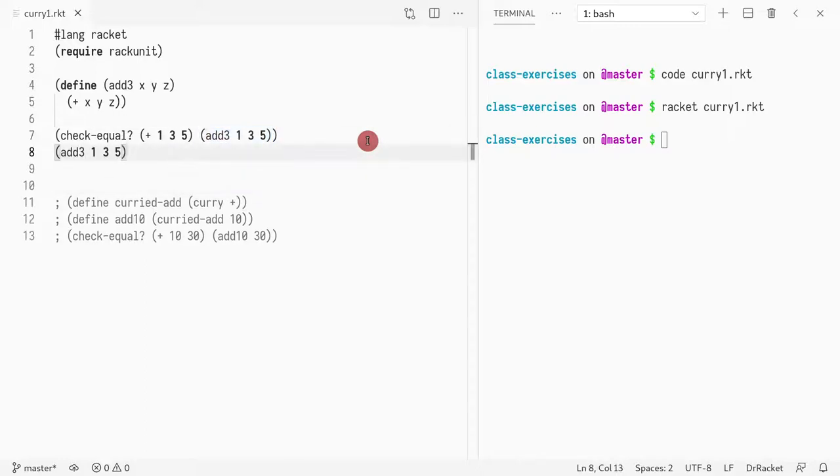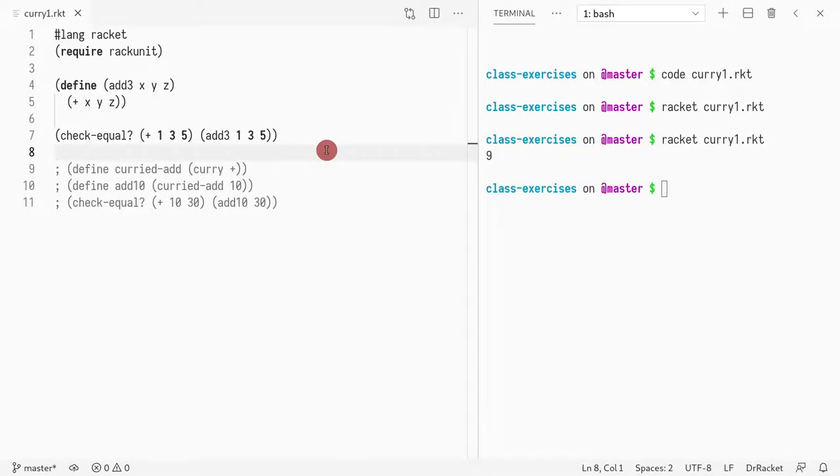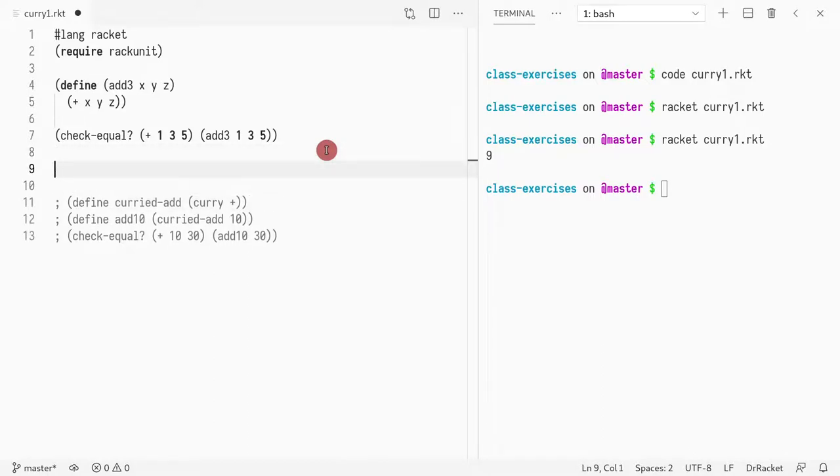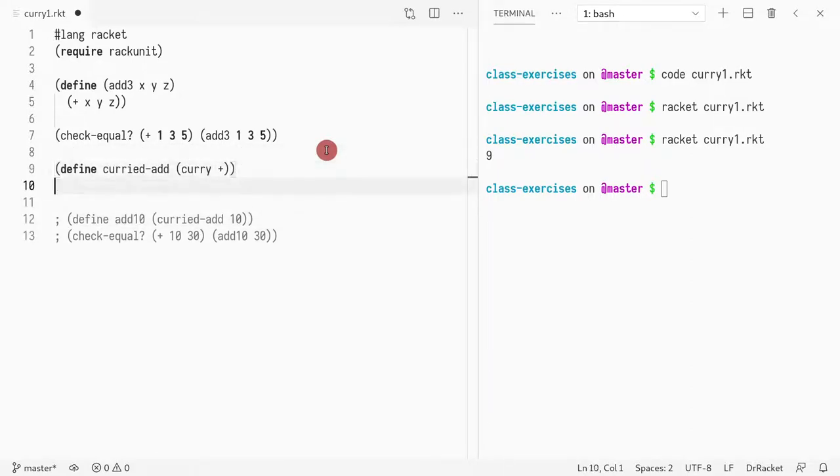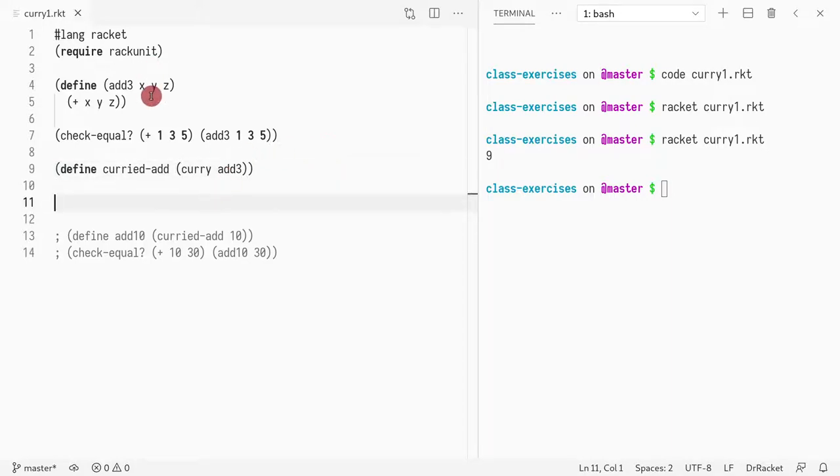Next thing I can do is define the curried add which is currying add three. Now what we have is a function that will first take x and return a function that will then take y, and return yet another function that will finally take z and compute the results.